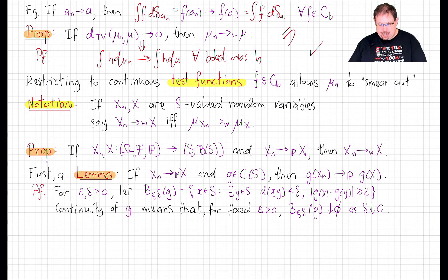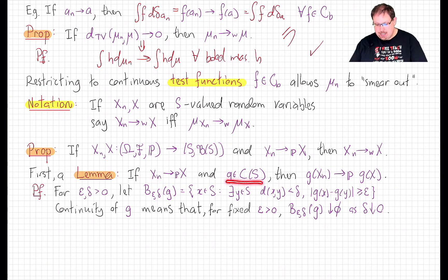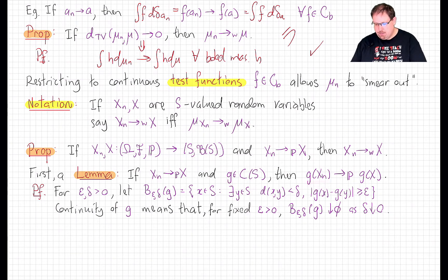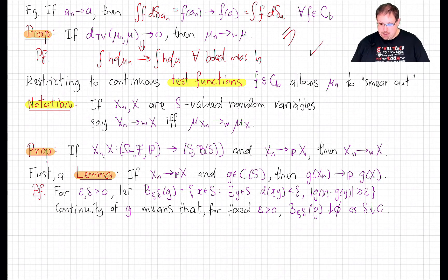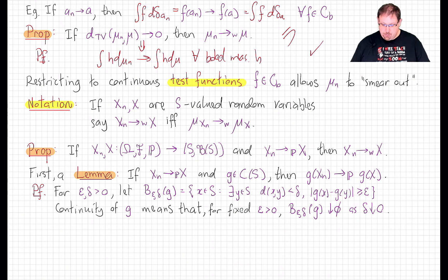Suppose that X_n converges in probability to X, and g is any continuous function on the state space S. Then g(X_n) converges in probability to g(X). This property holds trivially for almost sure convergence, is false for L^p convergence in general, and it turns out it holds for convergence in probability. That's a little bit tricky to prove — let's do so now.